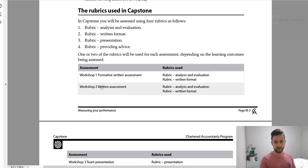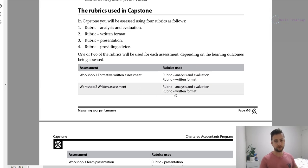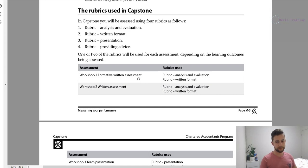My aim for this capstone exam prep course is to get you comfortable with using the rubric before you even attempt Workshop 1. That way, when you go into Workshop 1, you'll already have a good understanding and know how to apply it. The feedback you get will be precise and refined, allowing you to go from a 15 out of 20 — a good but not amazing response — to a 20 out of 20 exceptional response. When you go into Workshop 2, you'll be a step ahead of everyone else and ready to deliver an exceptional response.